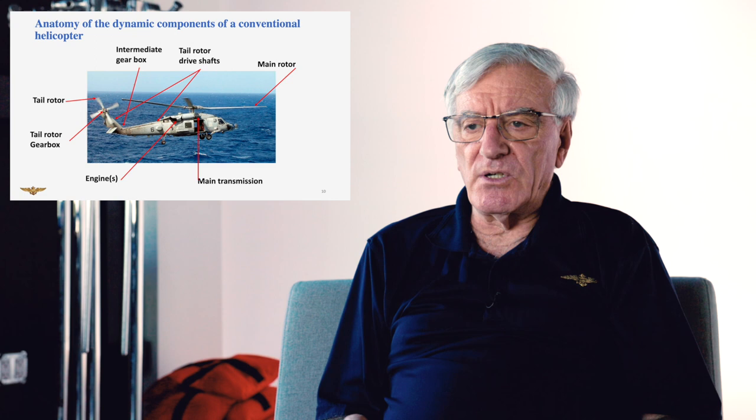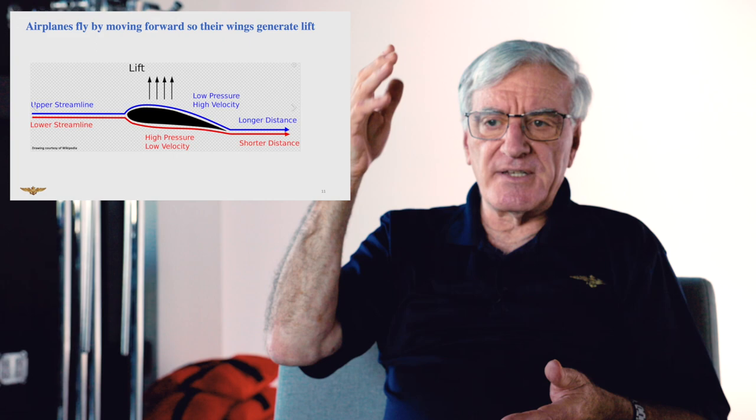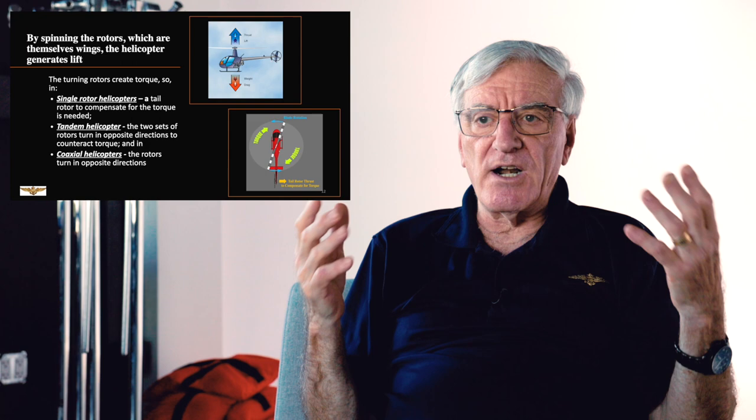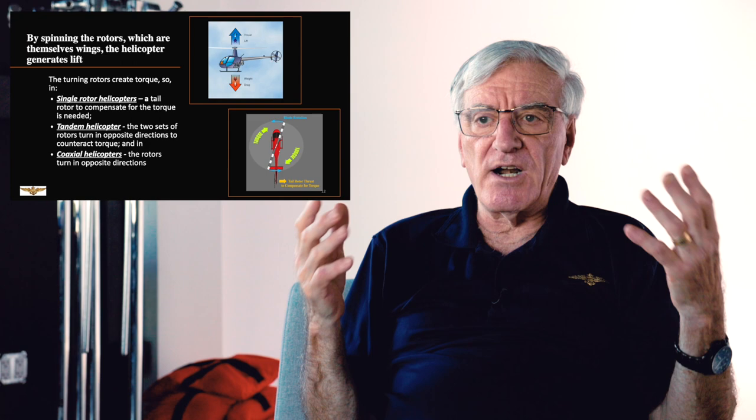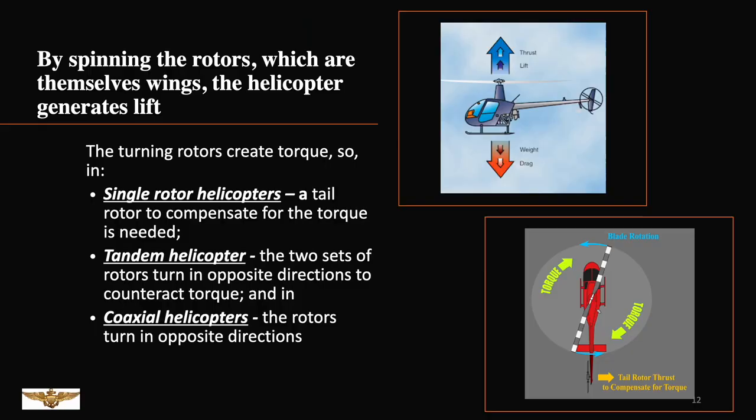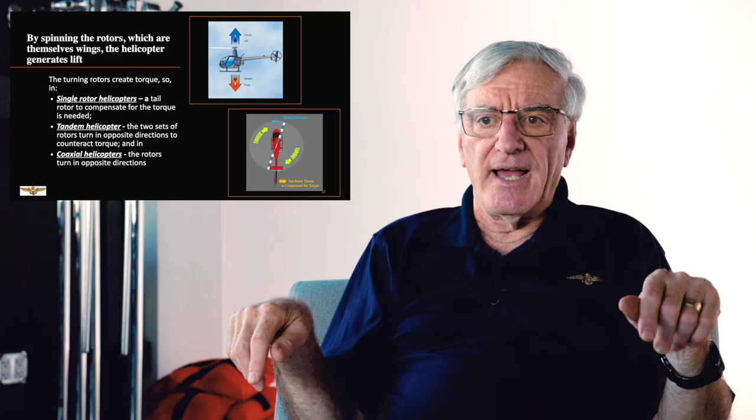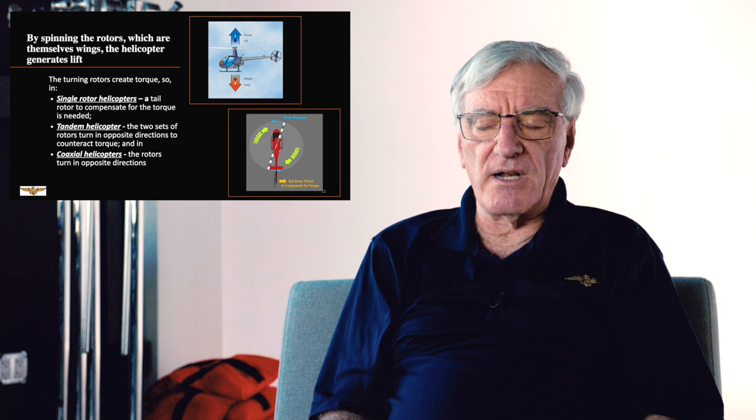Airplanes move forward because their wings generate lift. Essentially, the wing moving through the air has a low pressure area on the top, a high pressure area underneath, and you get lift, and the airplane takes off. Helicopters are a little bit different. By spinning the rotors, which in themselves are airfoils, the helicopter generates lift. What you have to do is generate enough lift by the rotors so that the helicopter can actually fly. However, when you do that, you create torque. The torque has to be compensated one of three ways: one is through a tail rotor, another is by using a tandem helicopter with rotor blades going in opposite directions at the front and the back, and then the coaxial, which is the rotor blades that are stacked on top of each other.